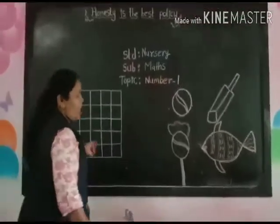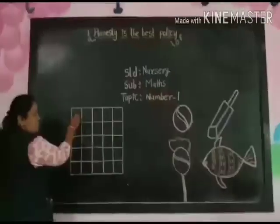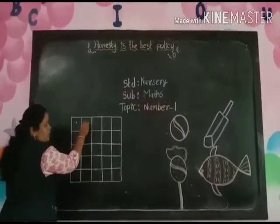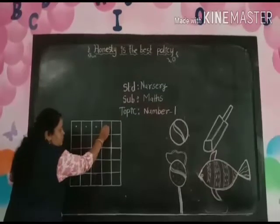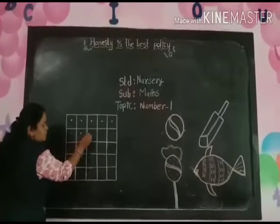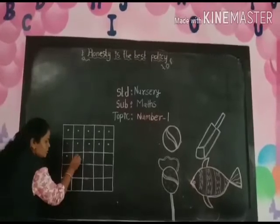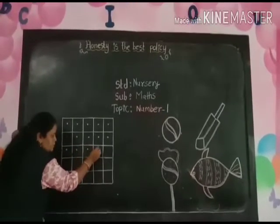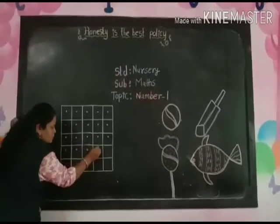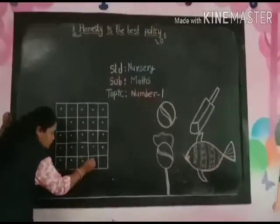Let's start. Number 1. First, we draw one dot in any square. You also draw one dot in your notebook. How to write number 1 — put your pencil on the dot and write number 1.